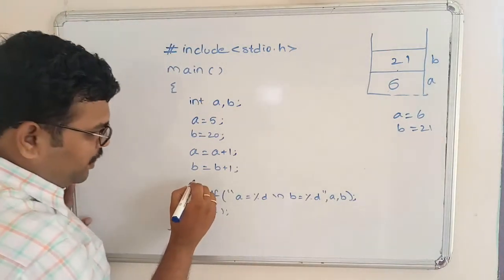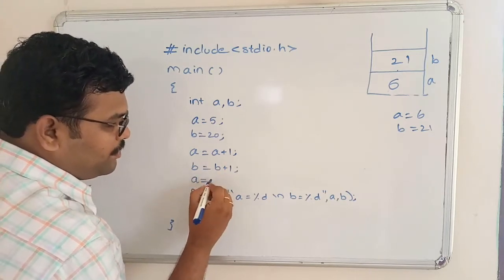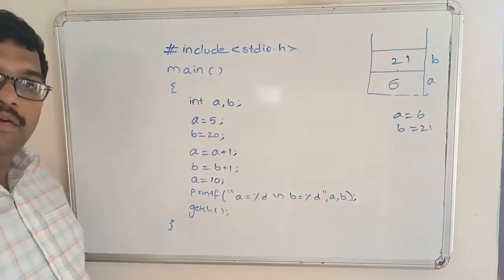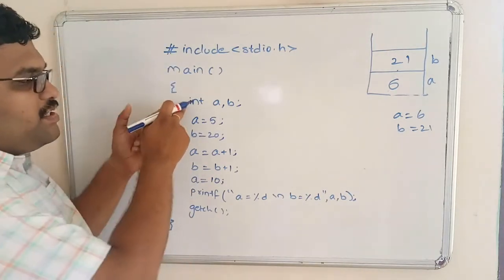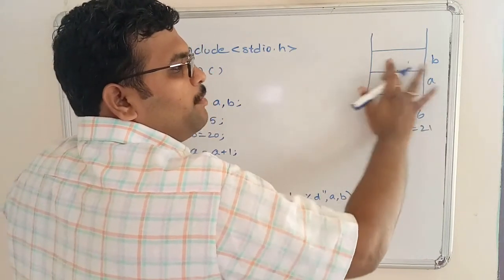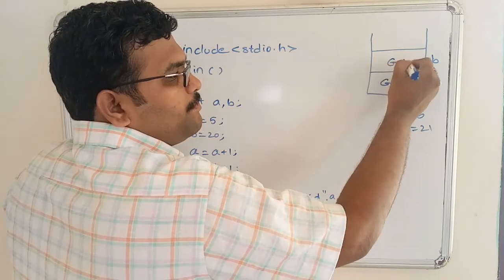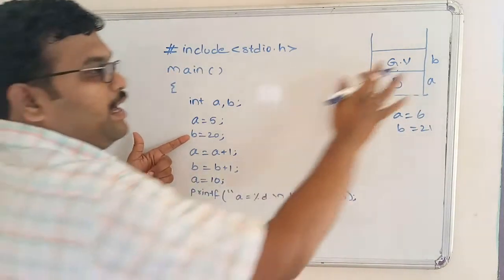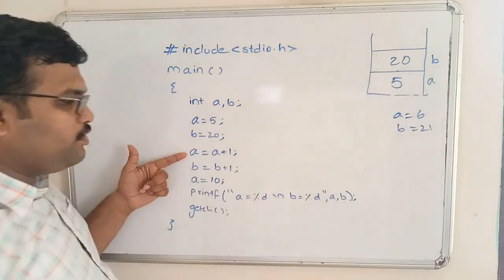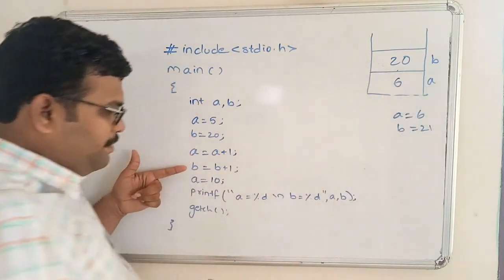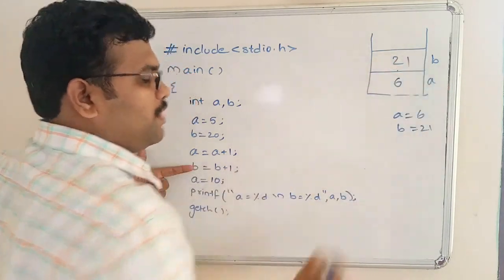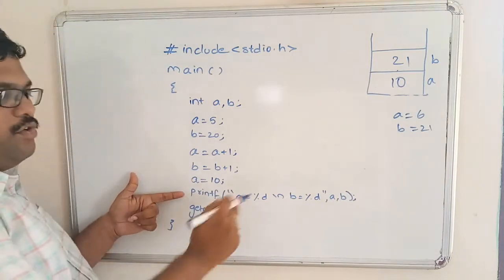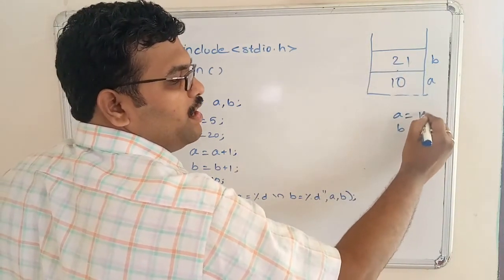If we include an additional statement 'a = 10' after 'a = a + 1', then the value 6 in 'a' will be replaced with 10. Now when printf executes, 'a = 10' and 'b = 21' will be displayed. So depending upon the sequence, the values in memory locations keep changing.